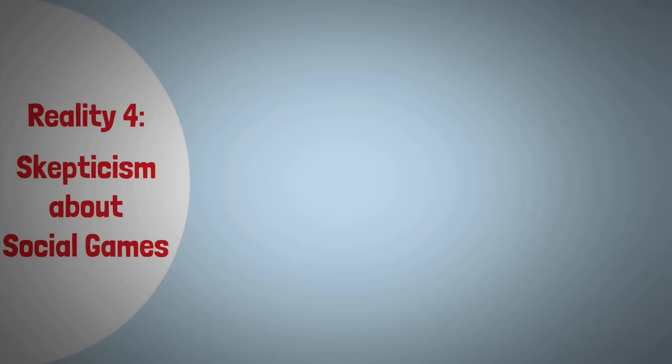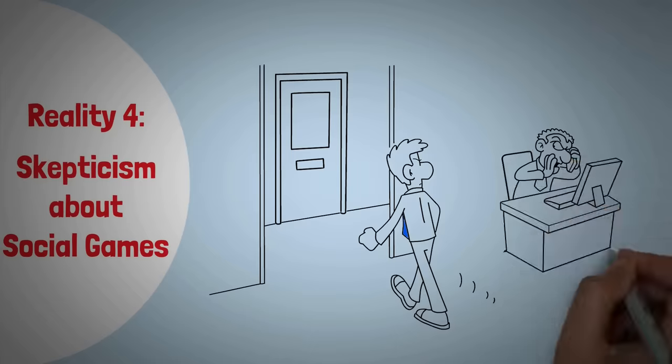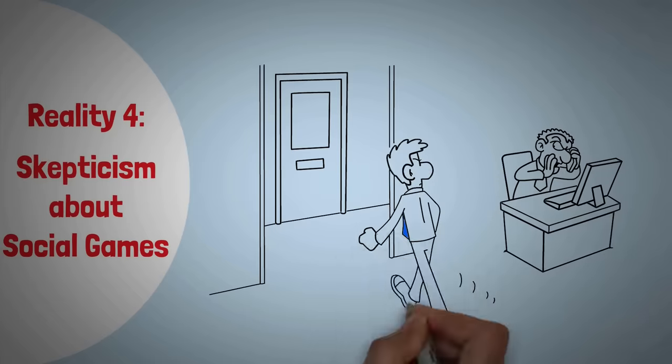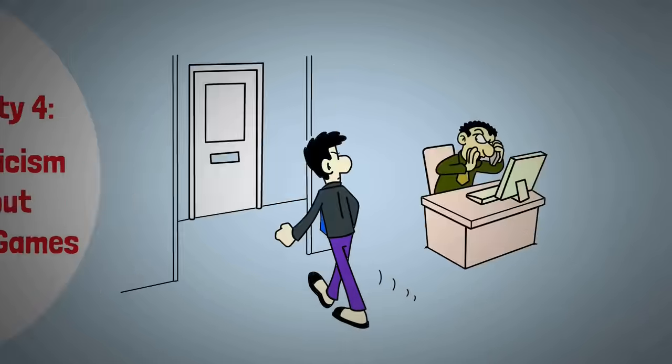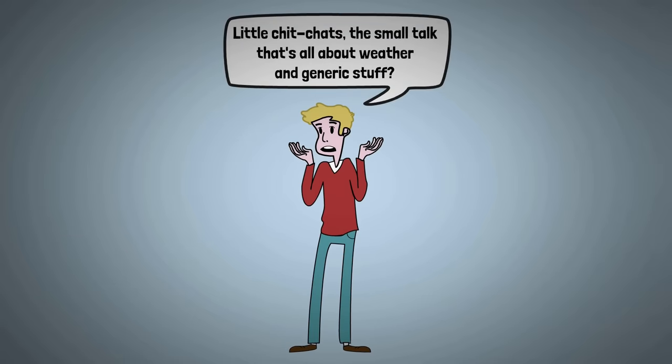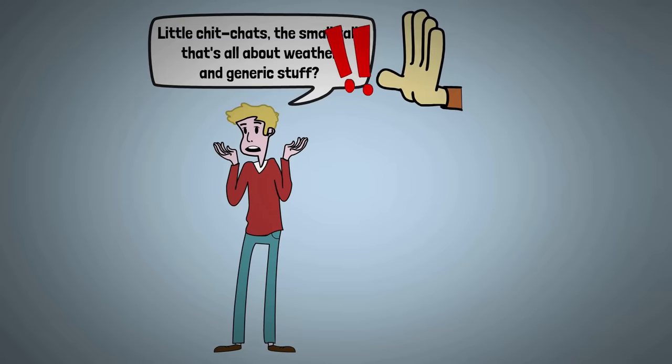Reality 4: Skepticism about social games. Sigma males, they're not easily fooled. They've got this knack for seeing beyond the surface, cutting through the act that many people put on. You know, those little chit chats, the small talk that's all about weather and generic stuff. Well, sigma males, they ain't buying it.